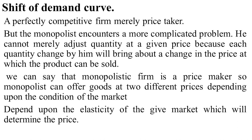The monopolist can offer a good at two different prices depending upon the condition of the market. He has two conditions: he can charge the same price for two different quantities, or he can charge two different prices for the same quantity. It is totally depending upon the elasticity of the given market, which will determine the price or adjust the quantity. That is why there is no perfect supply curve in monopoly.